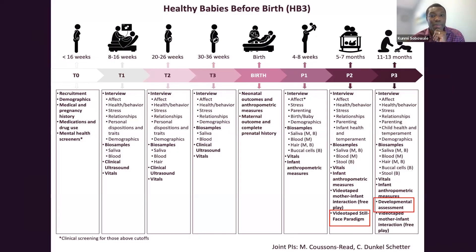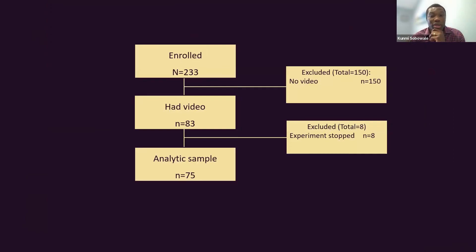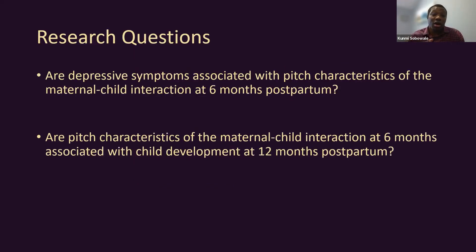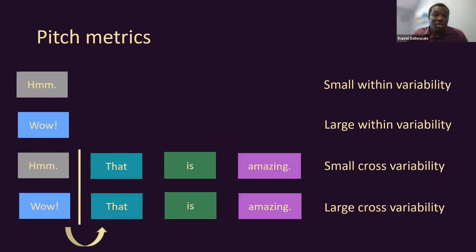Using the same study sample — because we just needed samples of the mom's voice rather than the whole interaction, we had a larger sample size of 75. The questions: are depressive symptoms associated with pitch characteristics of the mother-child interaction at six months postpartum? And are these pitch metrics at six months associated with child development at 12 months postpartum? The pitch metrics include within-utterance measures — an utterance being what you can say in a single breath — including mean pitch, pitch range within utterance, and standard deviation; and cross-utterance measures looking at pitch variability between subsequent utterances across the conversation.